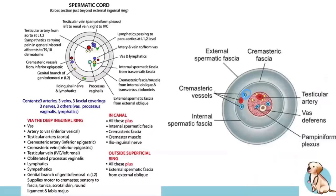In the cross-section diagram of the spermatic cord, you can start to identify where all these structures are located. You don't need to pinpoint each individual structure precisely — you just need to know what is present within the spermatic cord. And that covers everything to do with the descent of the testes and the spermatic cord.